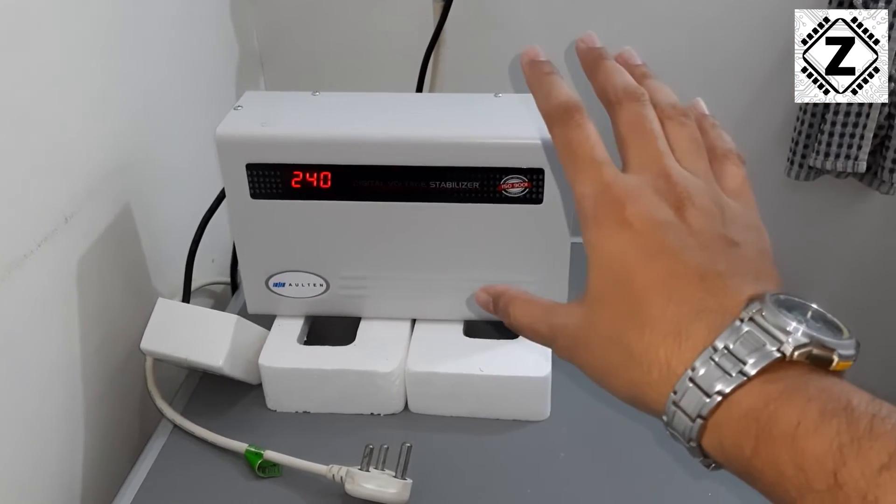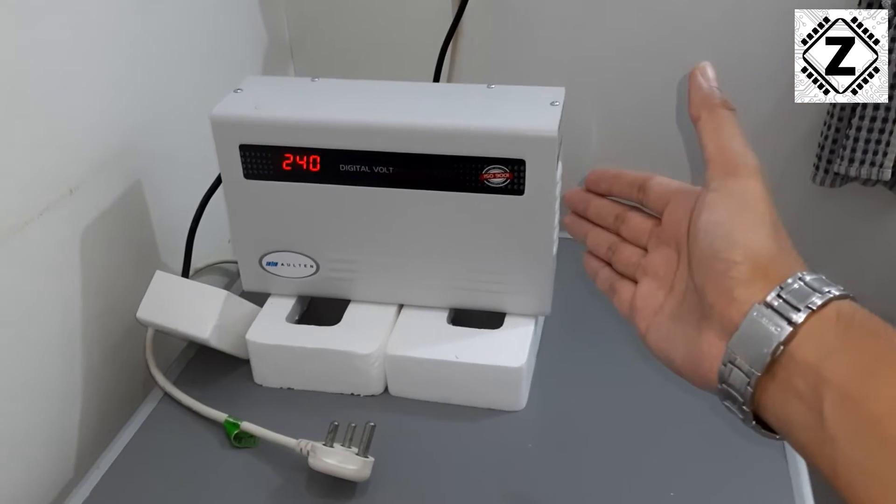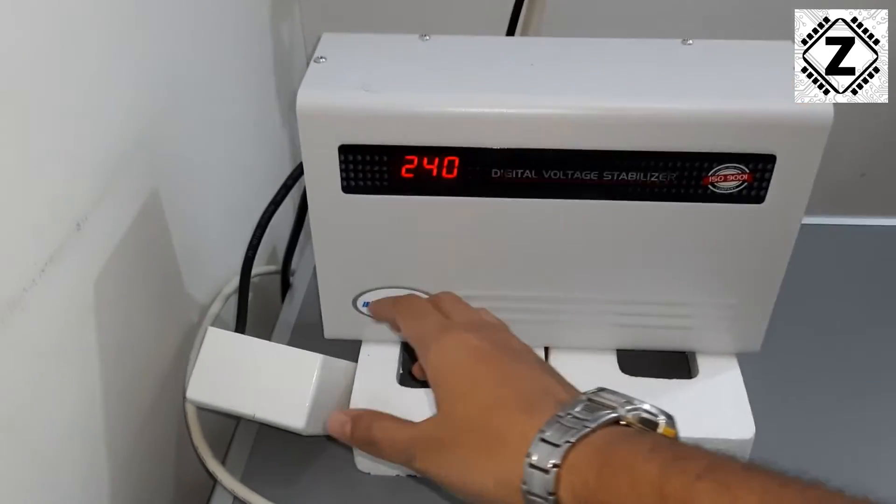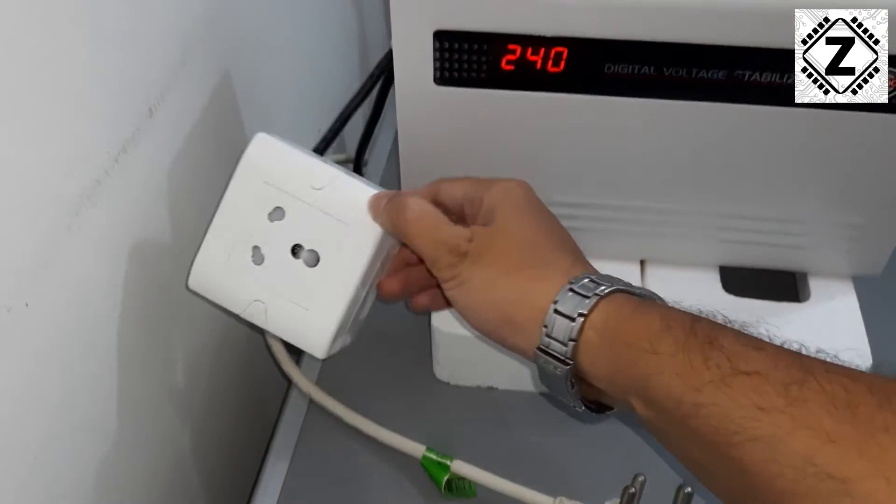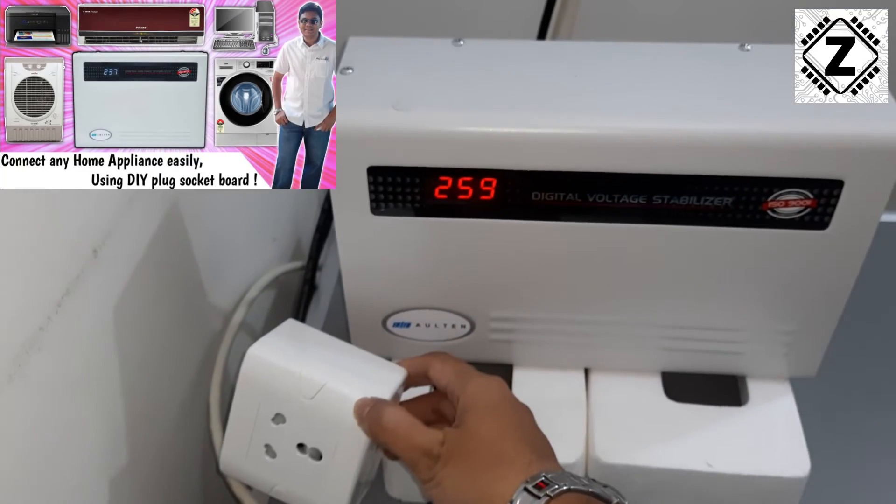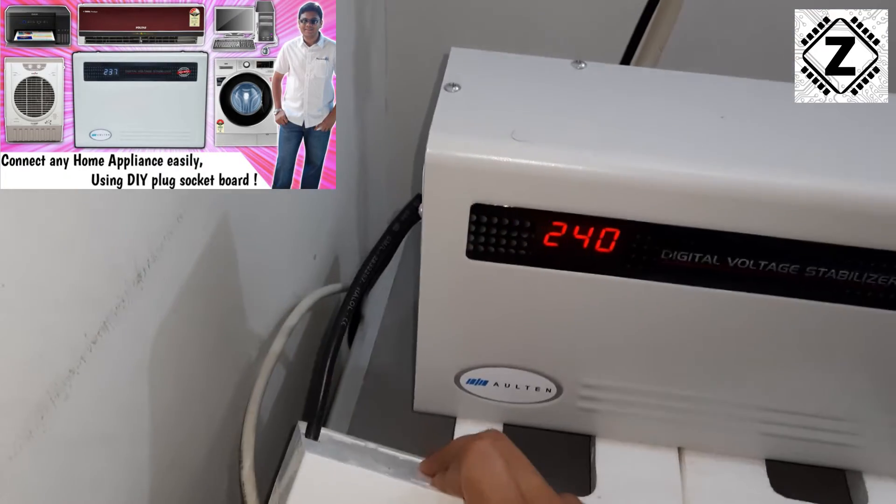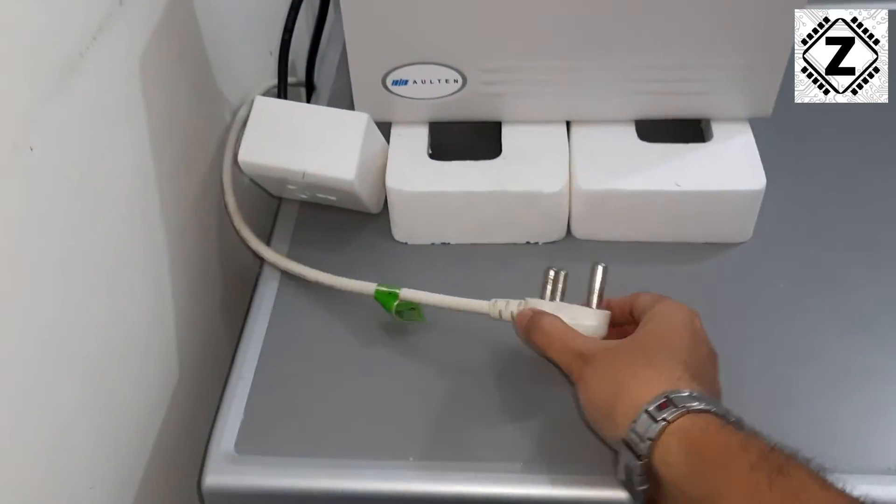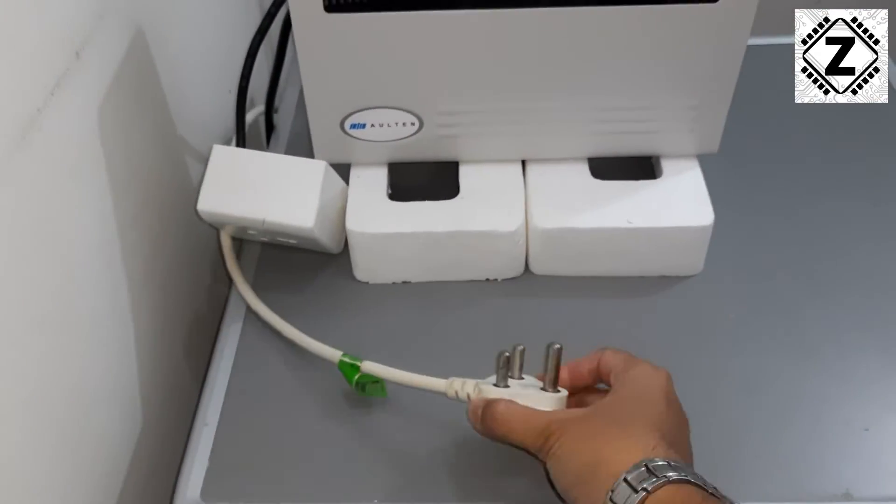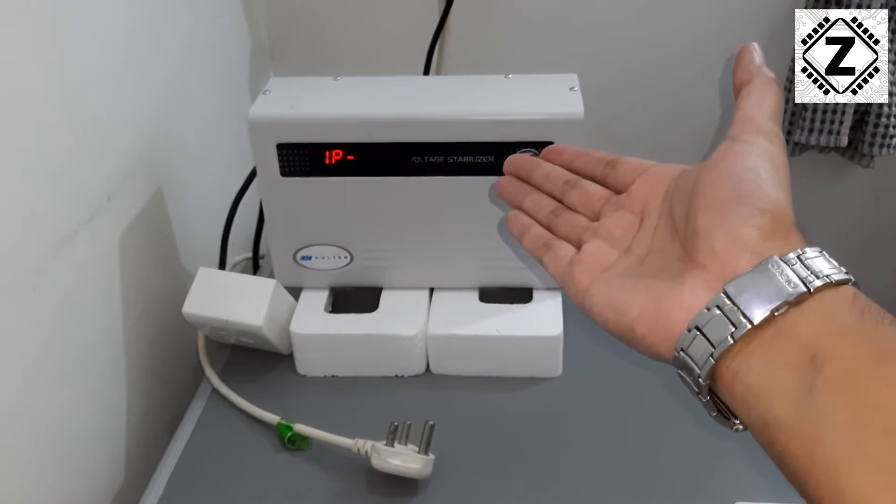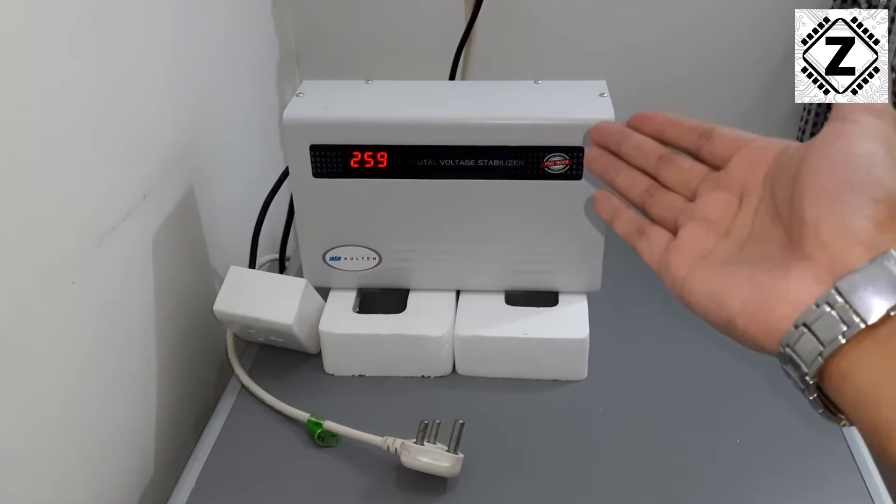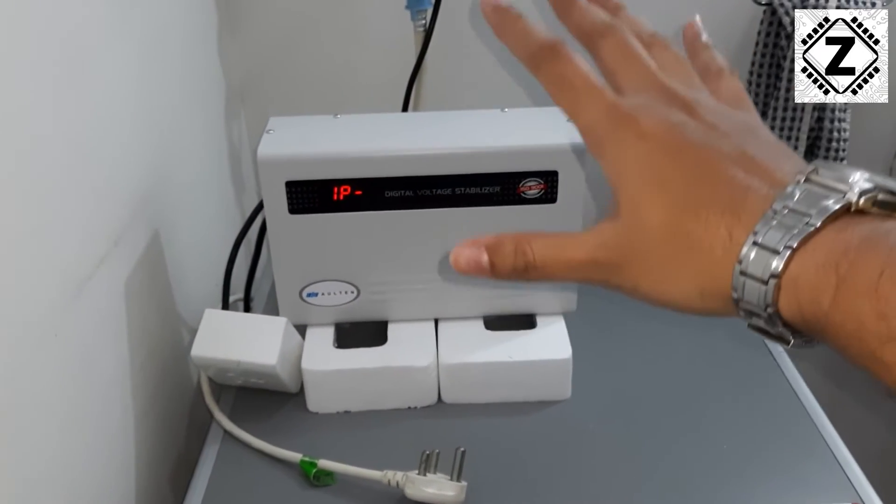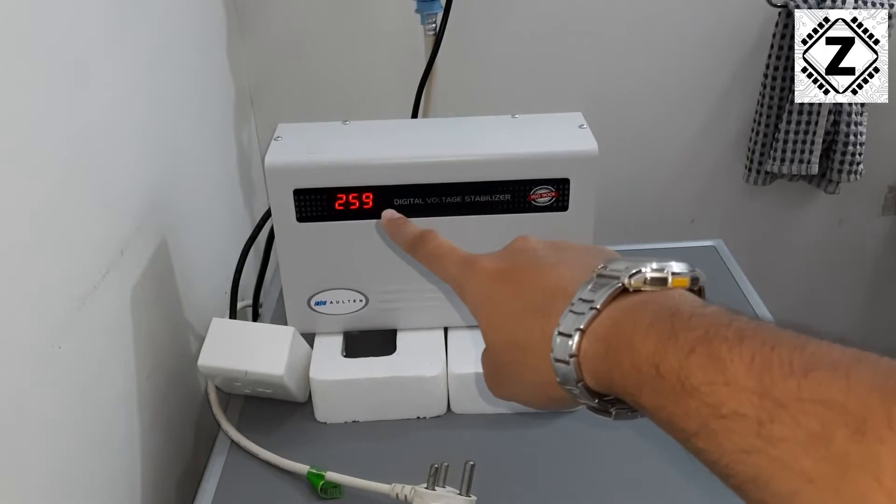For the sake of today's experiment, to prevent any kind of confusion, I've disconnected any kind of load on the output of this particular stabilizer. You can see the output section is completely empty. Usually the washing machine plug is connected over here, but I have removed that. Here we can see just the stabilizer is currently working, converting those 259, almost 260 volts, to a good output of 240 volts.